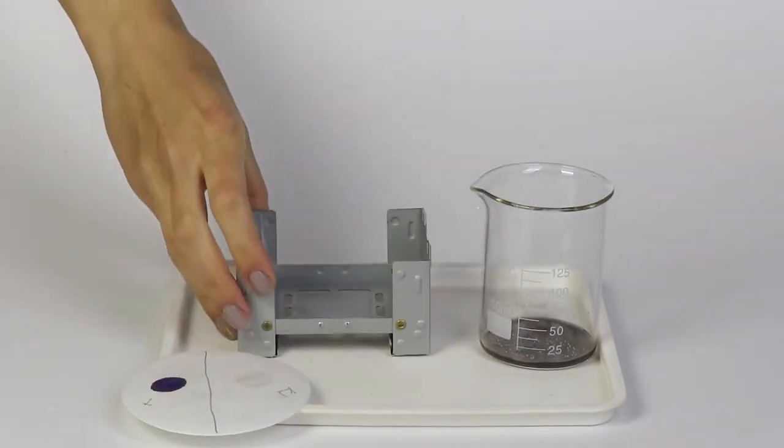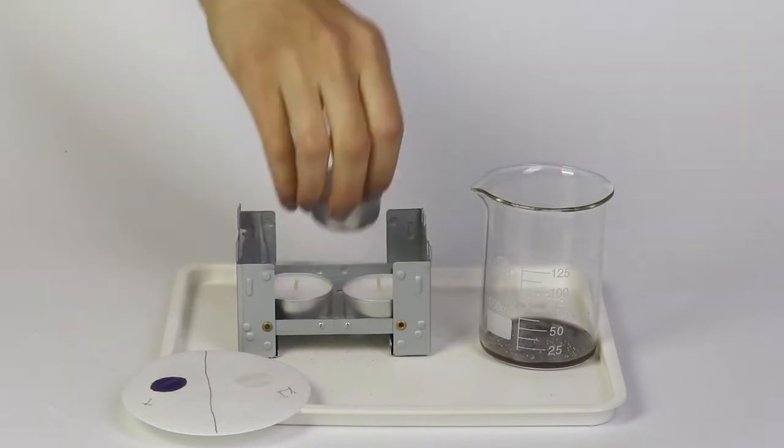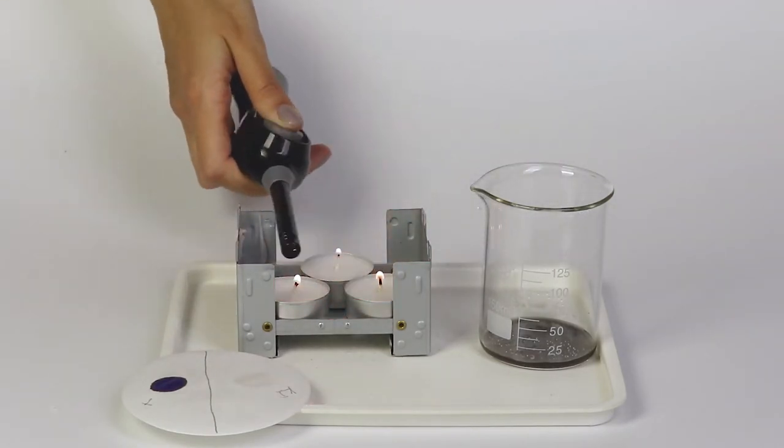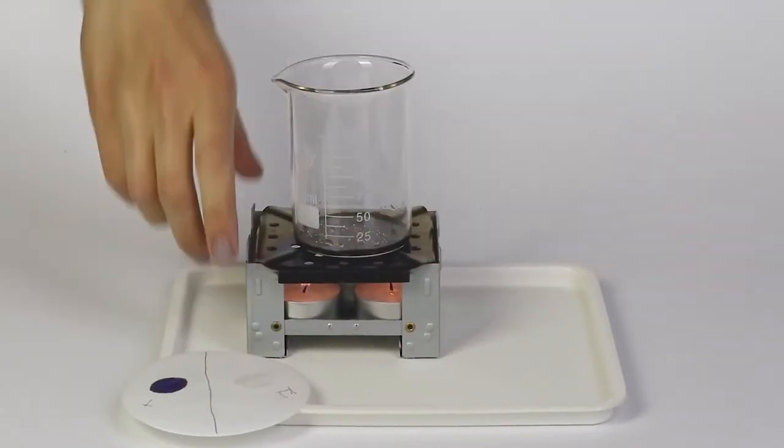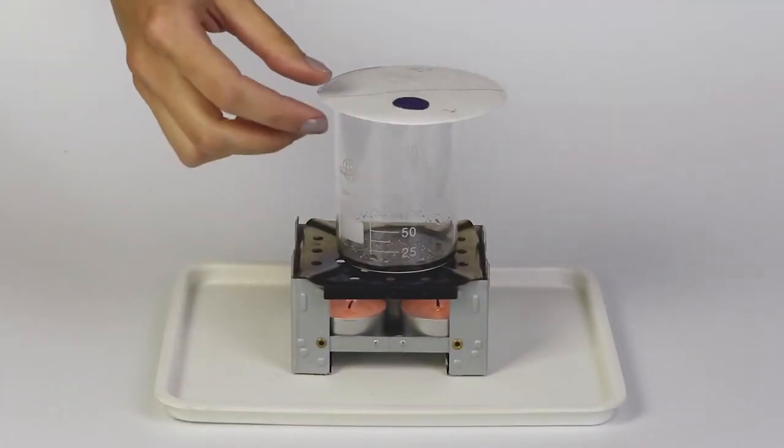Next, prepare the solid fuel stove. Set three candles into the stove, light them and cover the stove with the flame diffuser. Then, put the beaker on top and cover it with the filter paper.